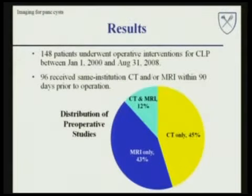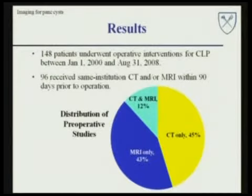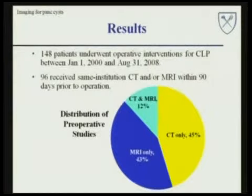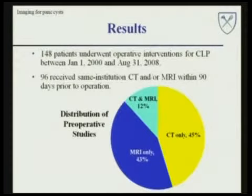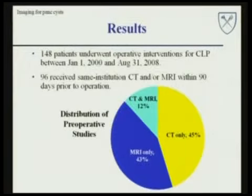Between January 1, 2000 and August 31, 2008, 148 patients underwent operative interventions for cystic lesions of the pancreas. Of those, 96 patients underwent same-institution CT and/or MRI within a 90-day period preceding the date of operation. Depicted in this chart is the distribution of preoperative studies as they were done at our institution. The proportion of patients who underwent CT only was fairly similar to the proportion of patients who underwent MRI, and an additional 12% of those patients underwent both studies.